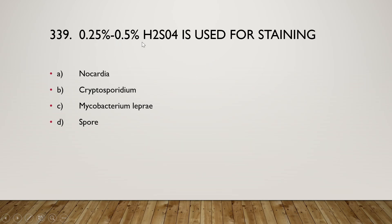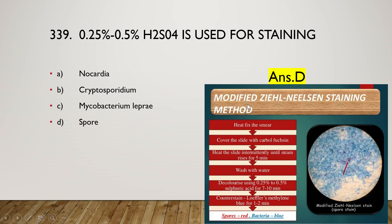0.25% to 0.5% H₂SO₄ is used for staining Nocardia, Cryptosporidium, Mycobacterium leprae, or spores? The right answer is option D — spores. For spore staining, 0.25% to 0.5% H₂SO₄ is used in the modified Ziehl-Neelsen staining method: heat-fix the smear, apply carbol fuchsin as the primary stain, heat until steam rises for five minutes, wash with water, decolorize with 0.25%–0.5% sulfuric acid for 7 to 10 minutes, then counter-stain with methylene blue. Spores appear red and bacteria appear blue.